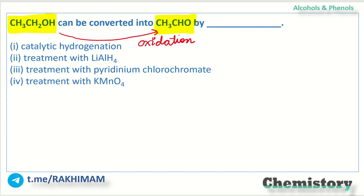If you reduce the alcohol, you are not actually going to get the product CH₃CHO. Talking about option 2 — treatment with lithium aluminum hydride — it is a reducing agent, a strong reducing agent basically. So this option is also ruled out.